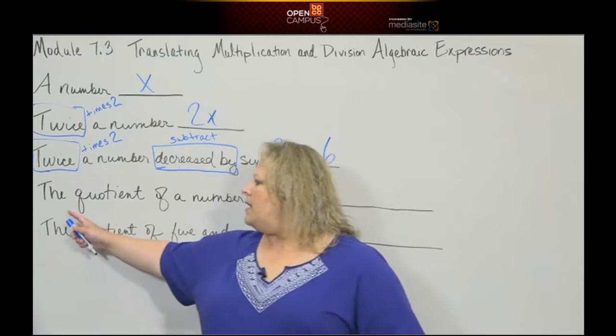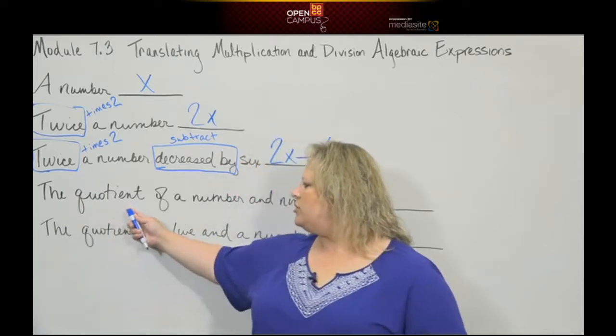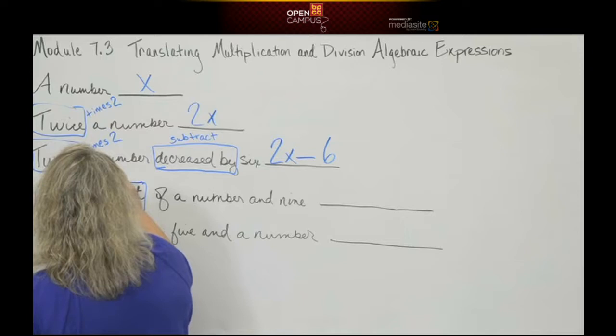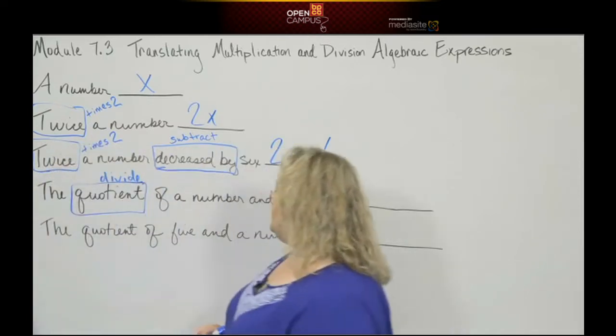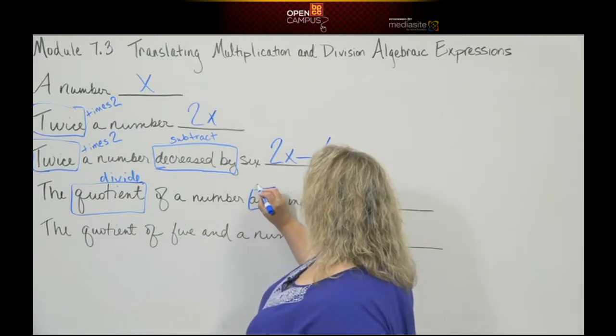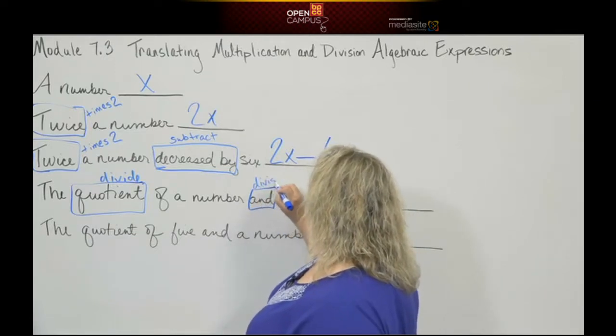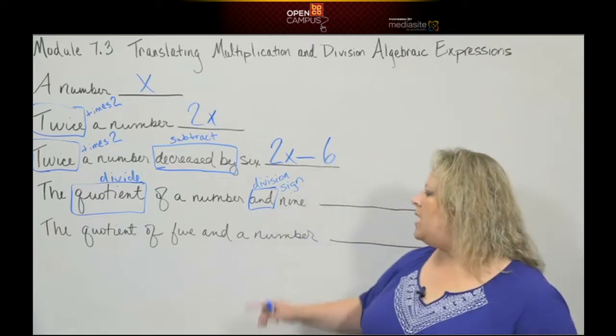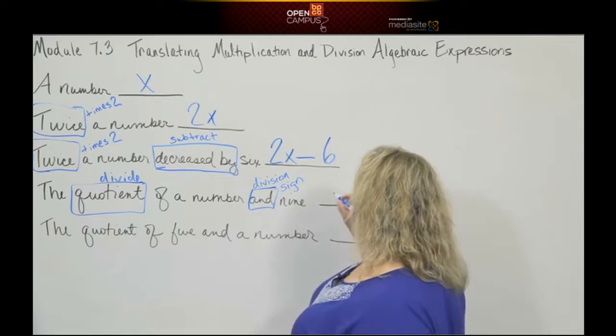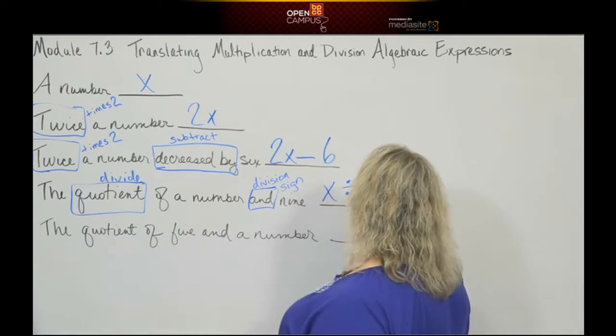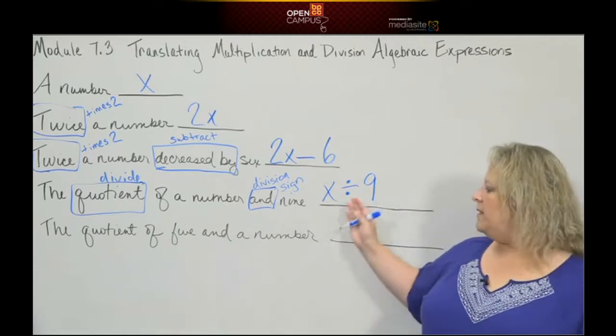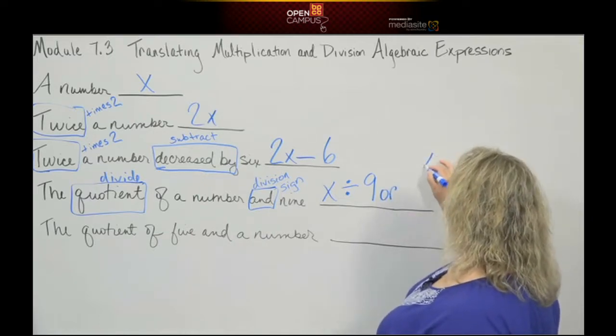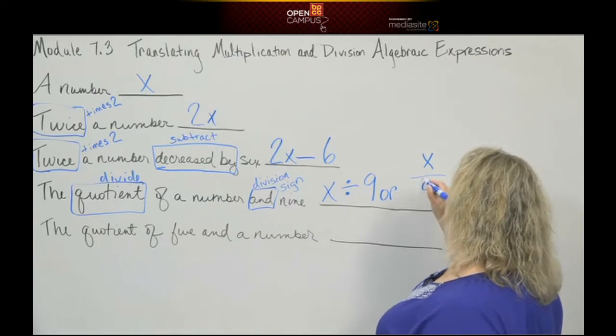Next we have some division: the quotient of a number and 9. Quotient means divide, and the word 'and' is where your division sign goes. You have a couple of options here: x divided by 9 with the division sign, or write it as a fraction with x over 9. That fraction bar represents division.